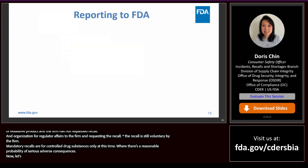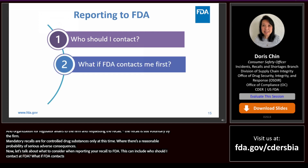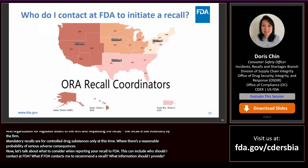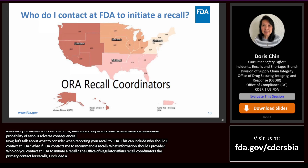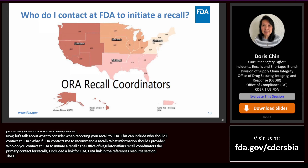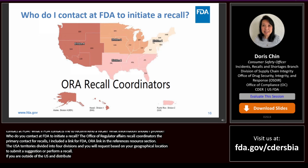Now let's talk about what to consider when reporting your recall to FDA — including who to contact, what to do if FDA contacts you first, and what information to provide. The Office of Regulatory Affairs recall coordinators are your primary points of contact for recalls. The USA and its territories are divided into four divisions, and you will work with the division based on your geographical location. If your firm is located outside the U.S. and distributes within the USA, your U.S. agent will act as your representative and facilitate your recall, contacting the ORA recall coordinator based on their geographical location.